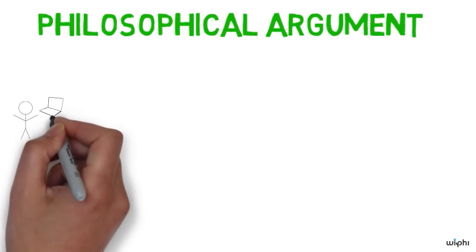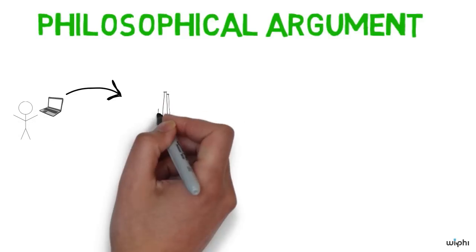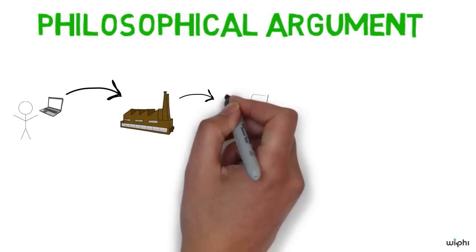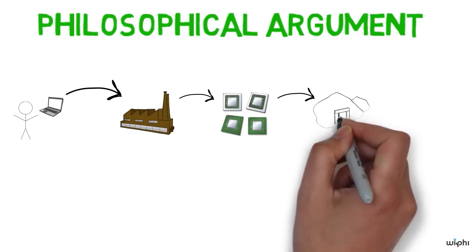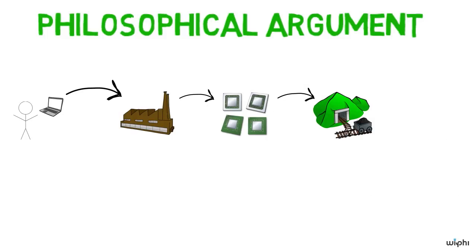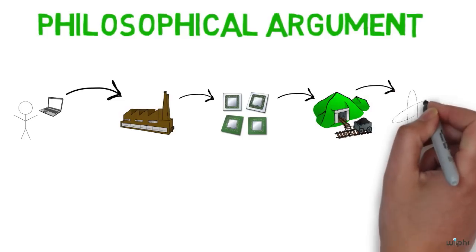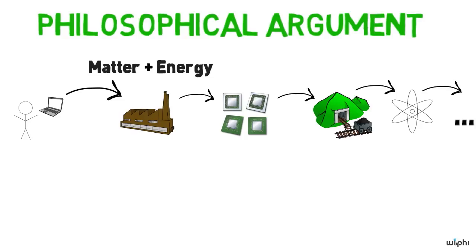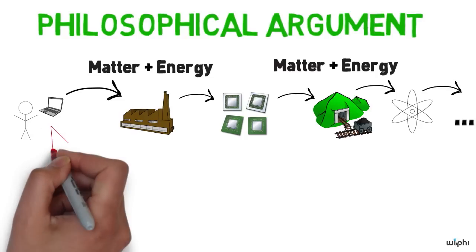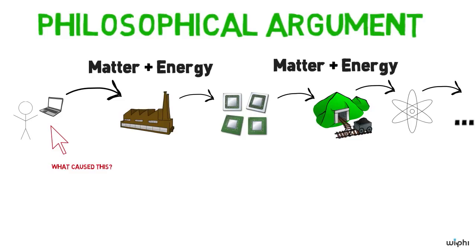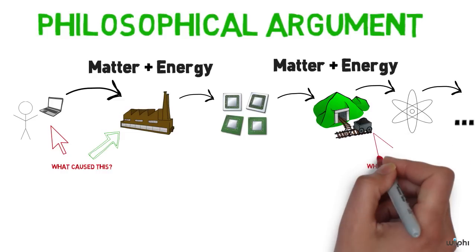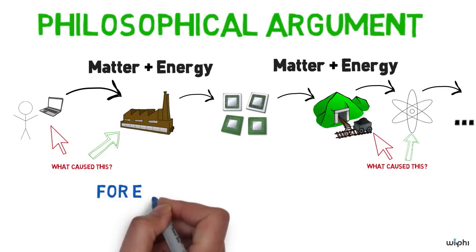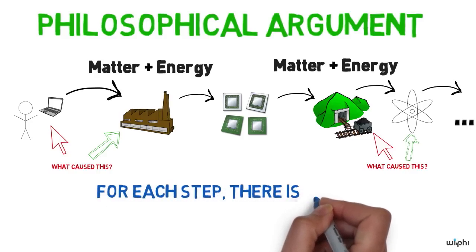Chances are you are watching this on a computer. Where did your computer come from? Well, it was probably assembled in a factory from a variety of metals and plastics, which were in turn formed or refined in factories from materials present in the earth. These elements in the earth were formed through various natural processes over long periods of time. Each step of the way, there was some combination of matter and energy. And at each of these steps, we could talk about where that matter and energy came from by describing some previous state of the world that contained matter and energy. And we could explain that by going back to an earlier stage and so on. At each step, there is a cause that explains why things are the way they are.